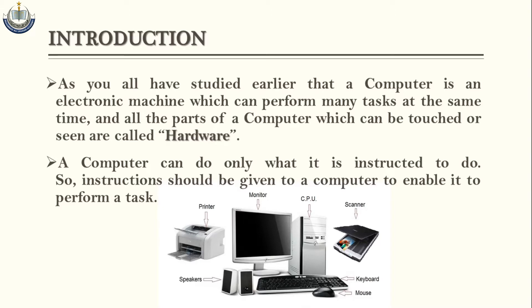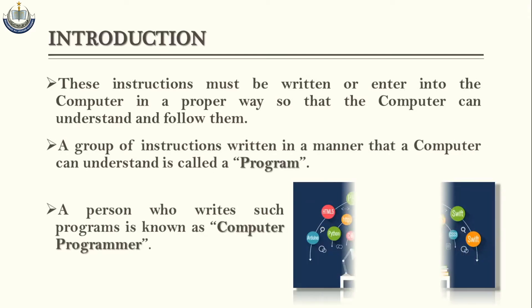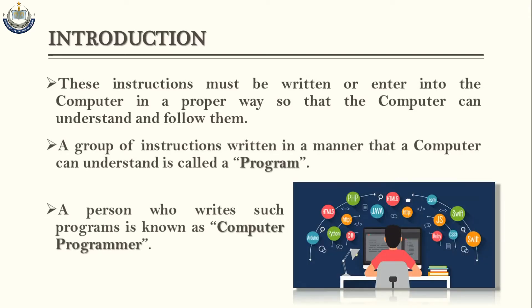A computer can do only what it is instructed to do, so instructions should be given to a computer to enable it to perform a task. Computer humary bohat se kaam bohat tezi aur asani se kerta hai, lekin computer se woh kaam karwaya jaata hai jo hum instructions ki soorat mein computer ko dete hain. These instructions must be written or entered into the computer in a proper way so that the computer can understand and follow them.